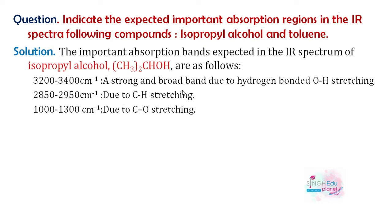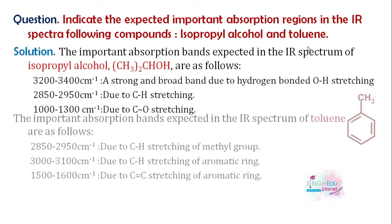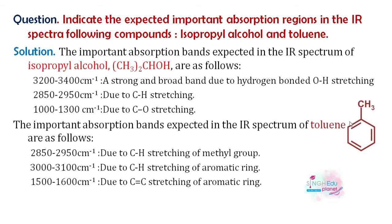Next we have toluene. Since there is a benzene ring in toluene, the C=C stretching of the aromatic ring will be between 1500 to 1600 cm⁻¹. The aromatic C-H stretching will be between 3000 to 3100 cm⁻¹. The methyl group C-H stretching will be between 2850 to 2950 cm⁻¹. Additionally, there is a monosubstitution band in the 1000 cm⁻¹ range.